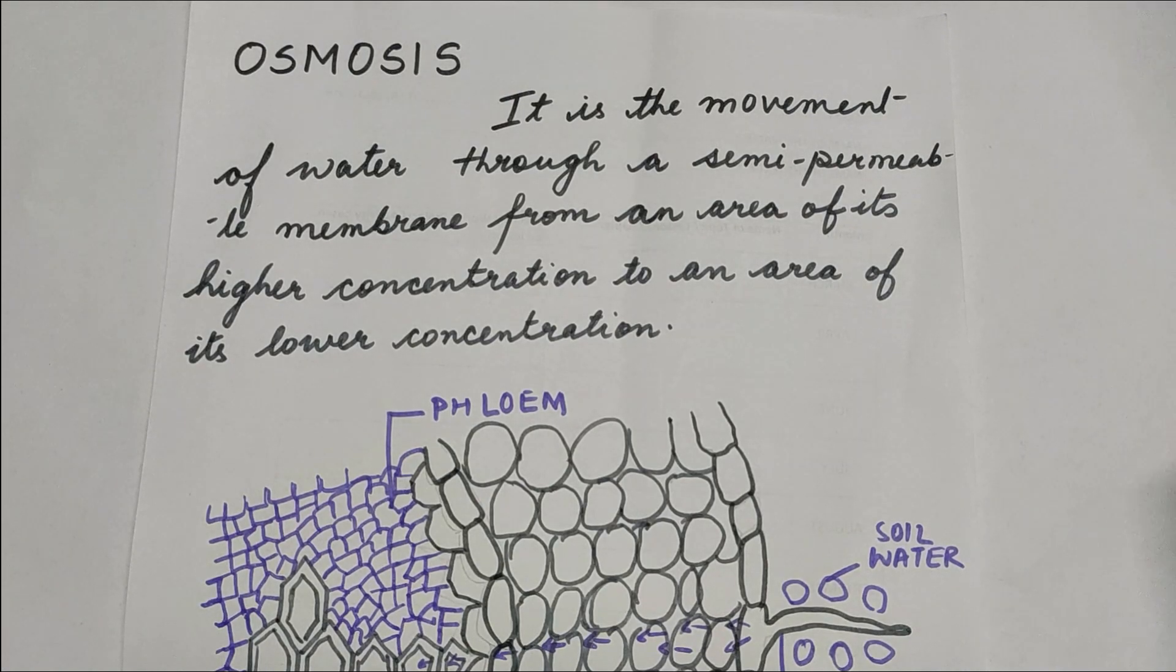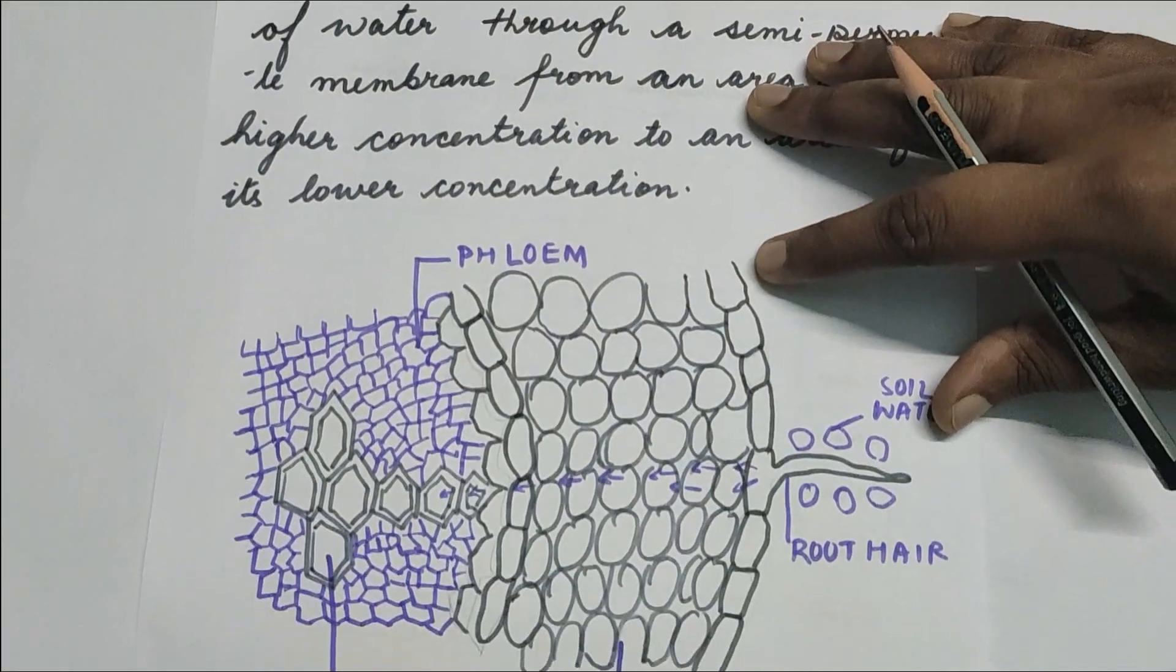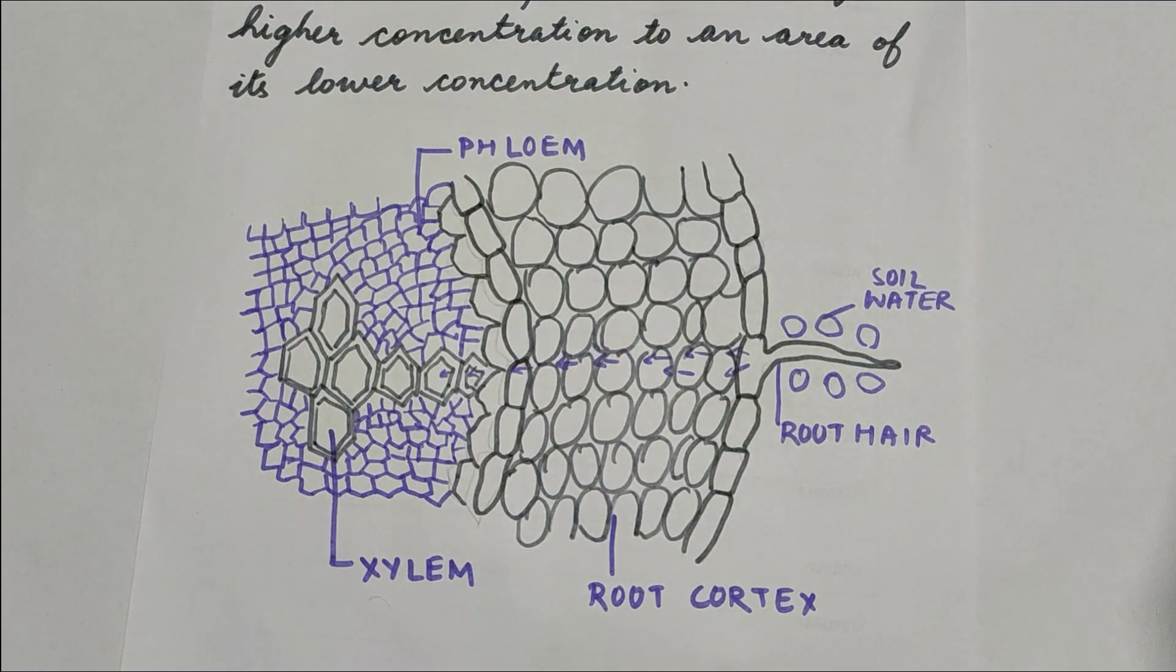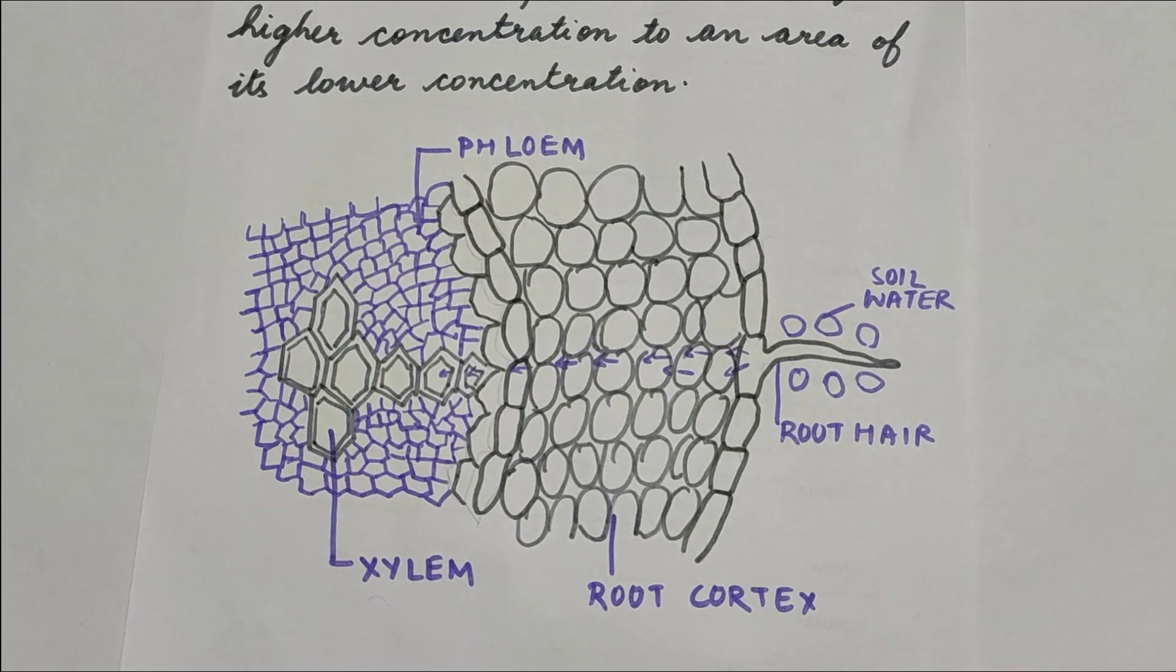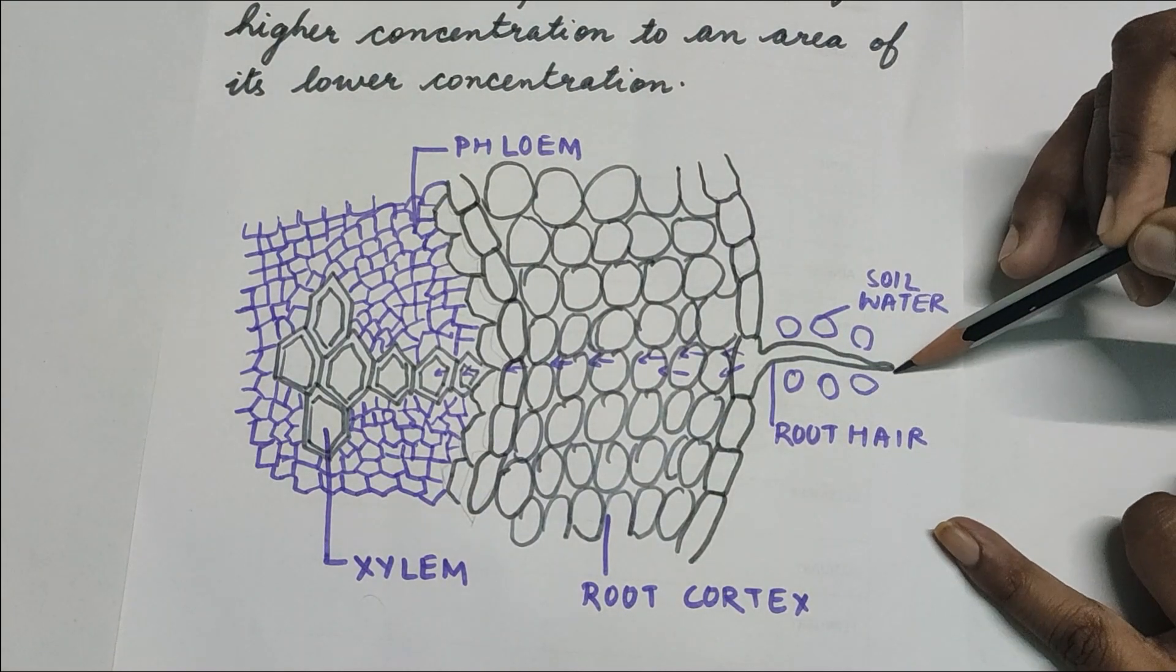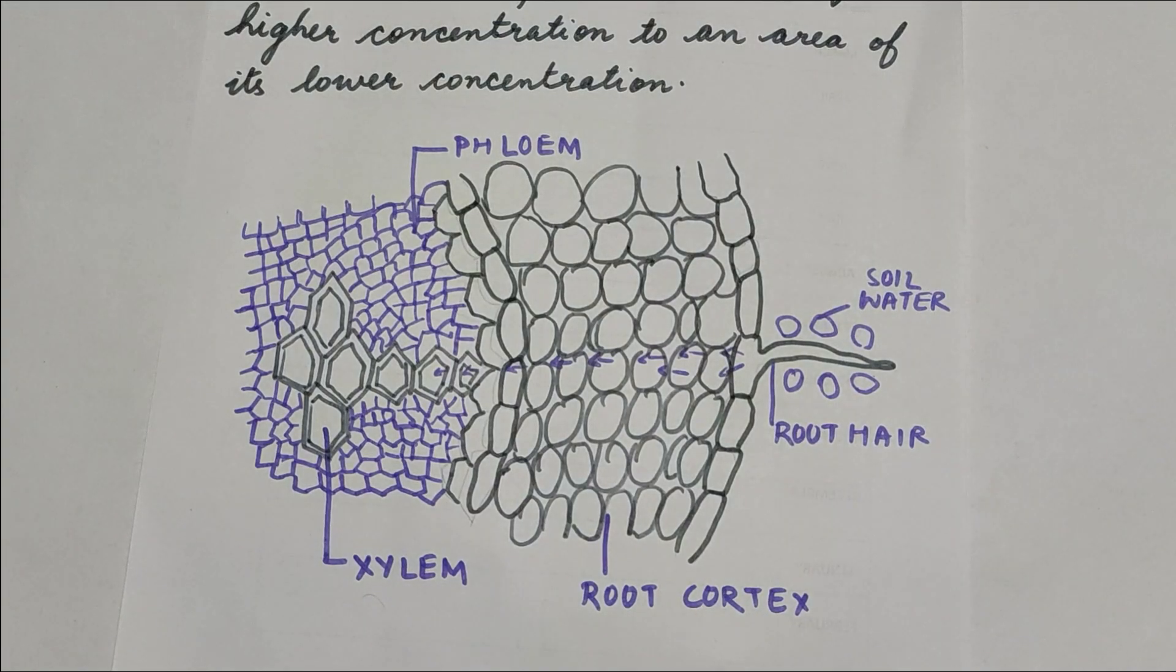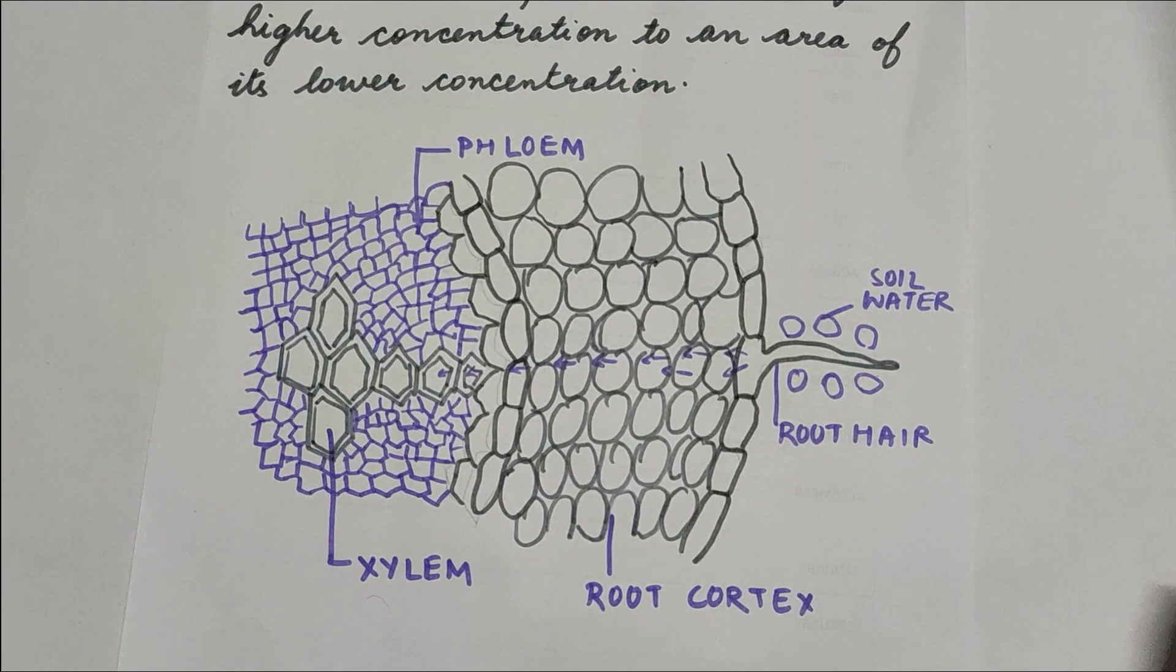Now what will happen in a plant cell, we will see this through the diagram. As you can see the diagram in which we have a root hair and the water molecules surrounding it. According to the process of osmosis, the concentration of water molecules is more in the soil than in the roots.